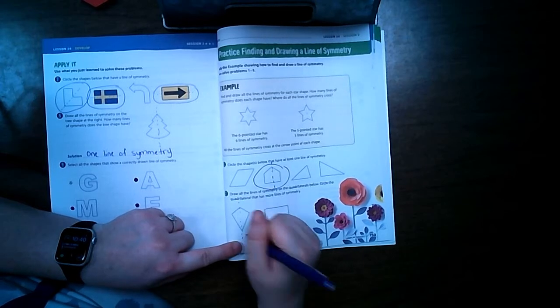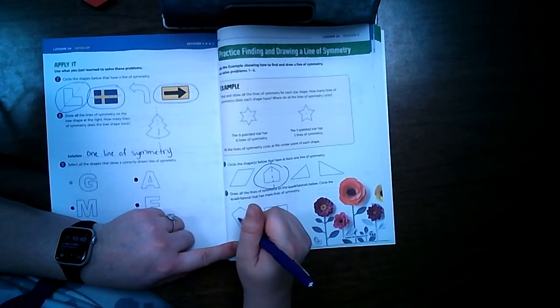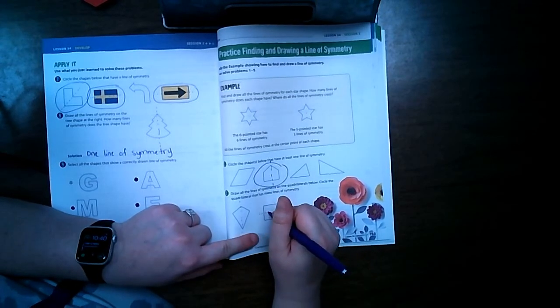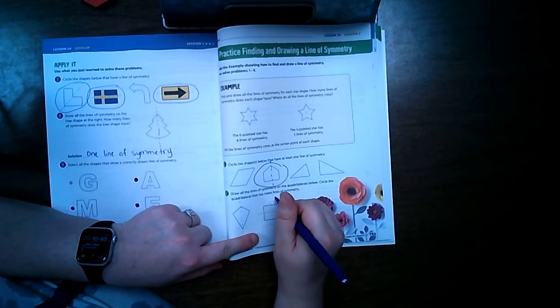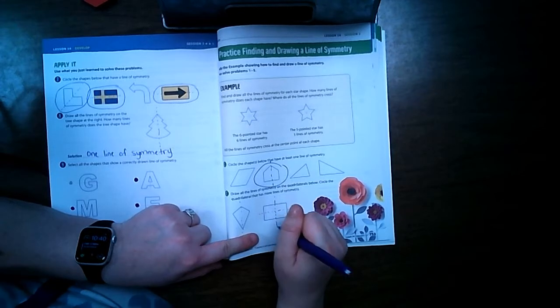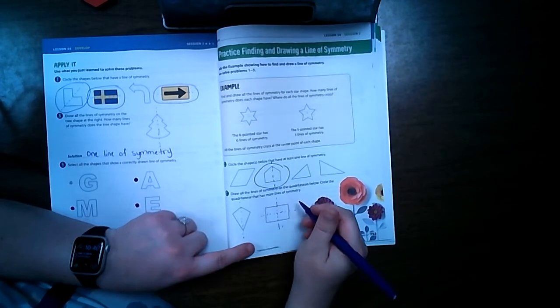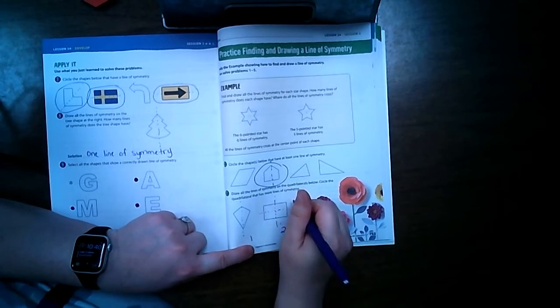Number two: draw all the lines of symmetry on your quadrilaterals below. Circle the quadrilateral that has more lines of symmetry. On this one it's kind of like a kite, it has that but no other way really works. This rectangle we can go this way, that way. It doesn't fold sideways so this one has two and this one has one, that means that one has more.